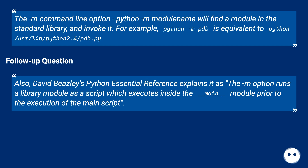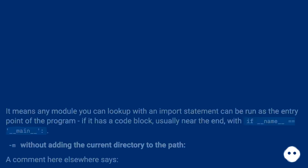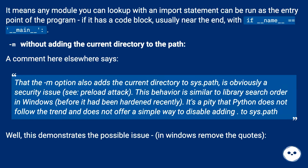David Beasley's Python Essential Reference explains the `-m` option as running a library module as a script, which executes inside the `__main__` module prior to the execution of the main script. It means any module you can look up with an import statement can be run as the entry point of the program, if it has a code block — usually near the end — with `if __name__ == '__main__':`.